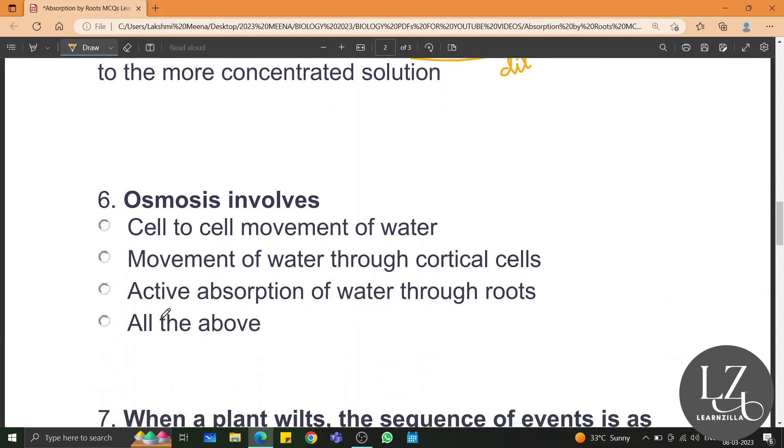Osmosis involves cell to cell movement of water, movement of water through cortical cells, and active absorption of water through roots. So the answer is all the above.